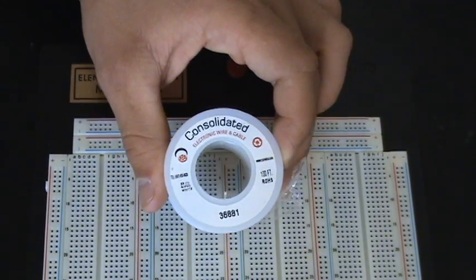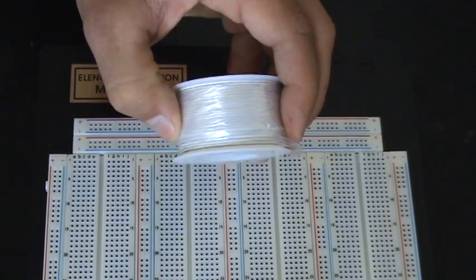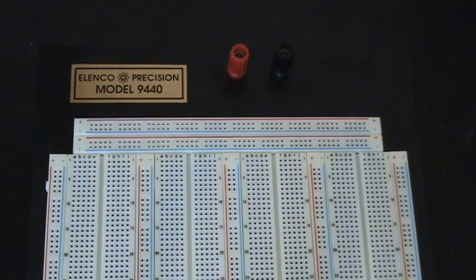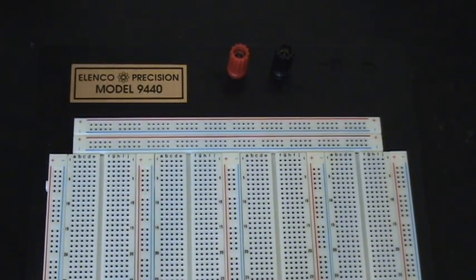And with 22 gauge wire, all you have to do is strip the ends of it with a wire stripper and you'll be good to go. So now I'm going to zoom in and show you guys the combinations that work and what doesn't on a breadboard.